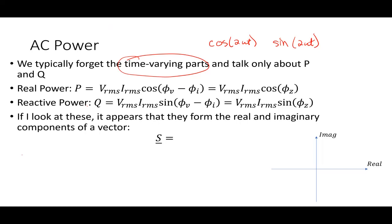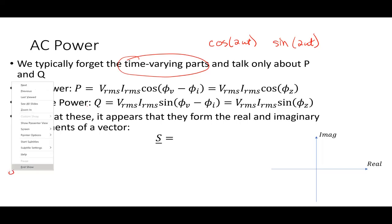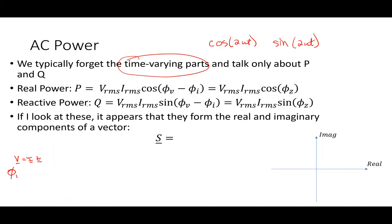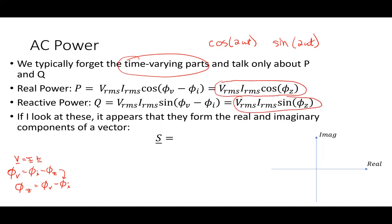By Ohm's Law, because V equals IZ as a phasor, the angle-wise relationship gives us phi V equals phi I plus phi Z. That means phi Z is equal to phi V minus phi I — just a simple rearrangement that comes out of Ohm's Law.